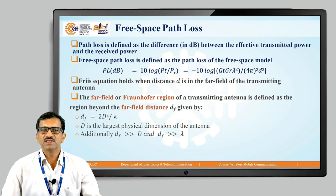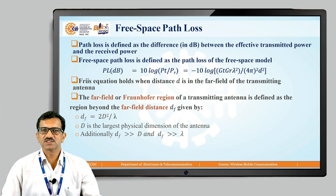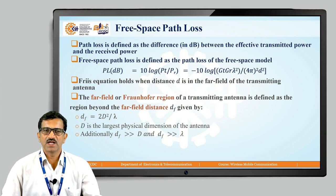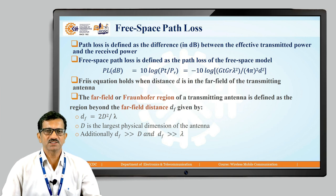The Friis equation holds when the distance d is in the far field of the transmitting antenna. An antenna has a far field and a near field. The far field region of the transmitting antenna is defined as the region beyond the far field distance dF, given by dF equals 2d² divided by λ, where d is the largest physical dimension of the antenna. Additionally, dF must be much greater than d and much greater than λ. The far field region depends on the wavelength of the signal and the size of the antenna.